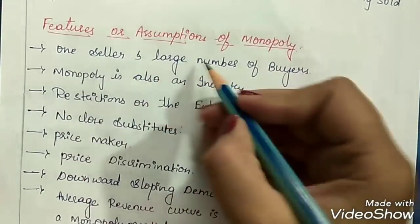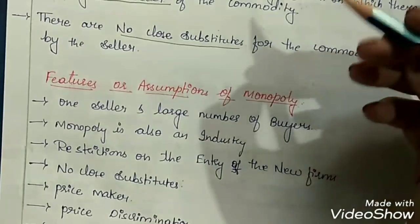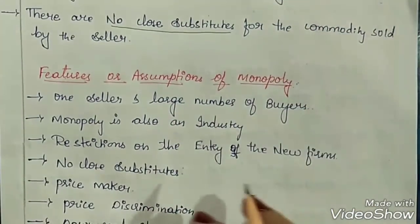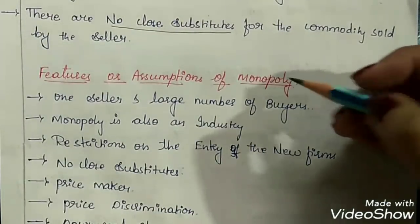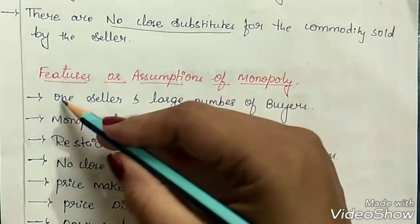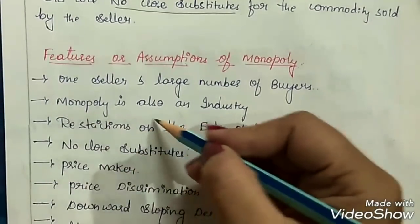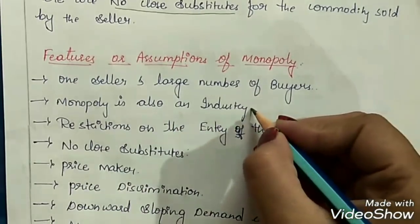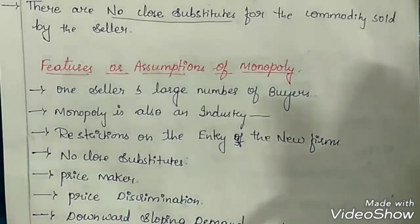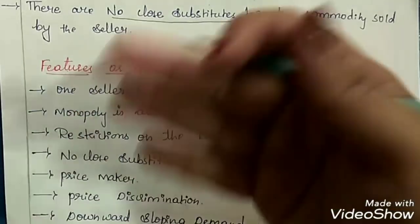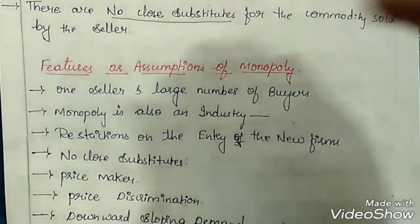First is one seller and large number of buyers. There is only one single seller in the market, but there can be many buyers. In perfect competition market, we had many sellers as well as many buyers — hence it was called as perfect competition market. And this is the reason monopoly is called an imperfect competition market. Next, Monopoly is also an industry. In this type of market, firm and industry are same, because there is only one seller — he is called as firm and he is also called as industry. Hence, firm and industry are same.